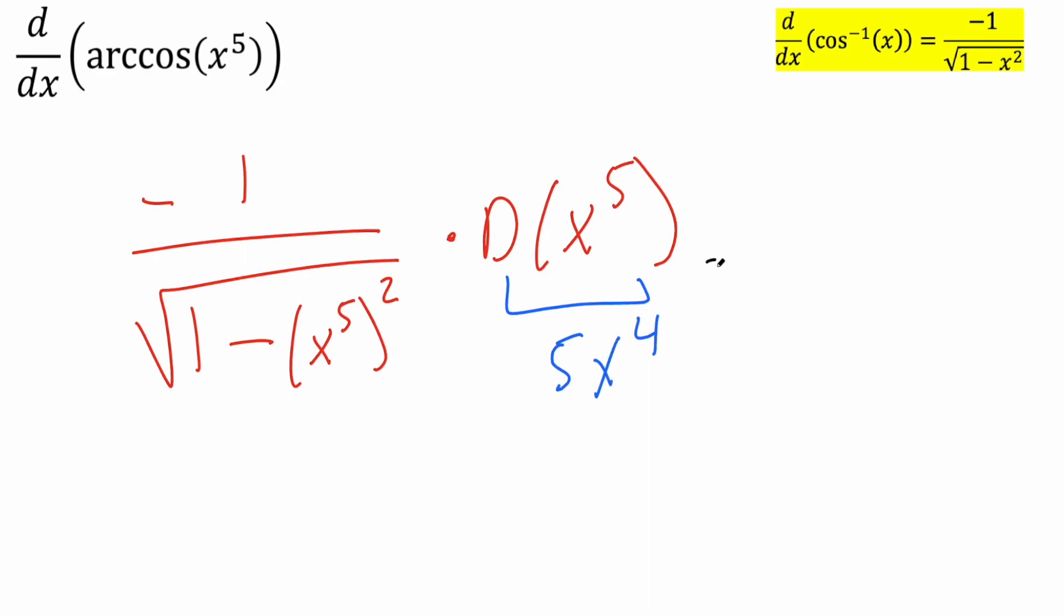So now we can just swap and we'll be done. We have negative five x raised to four divided by the square root of one minus x raised to five raised to two. All you do is multiply the powers, so five times two is ten. We get x raised to ten. This right here is our final answer and that's all we need to do for this problem.